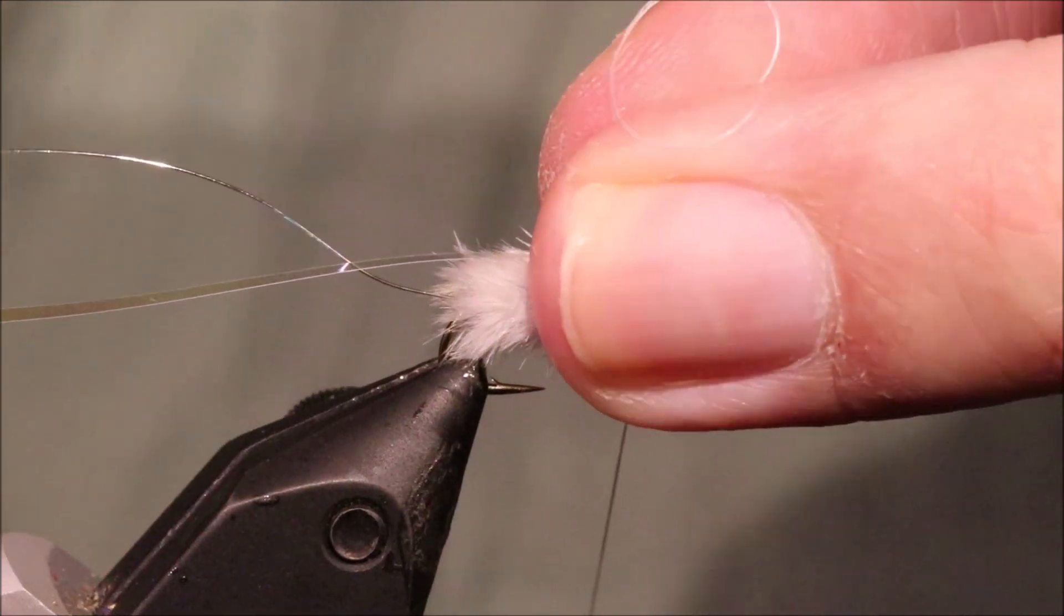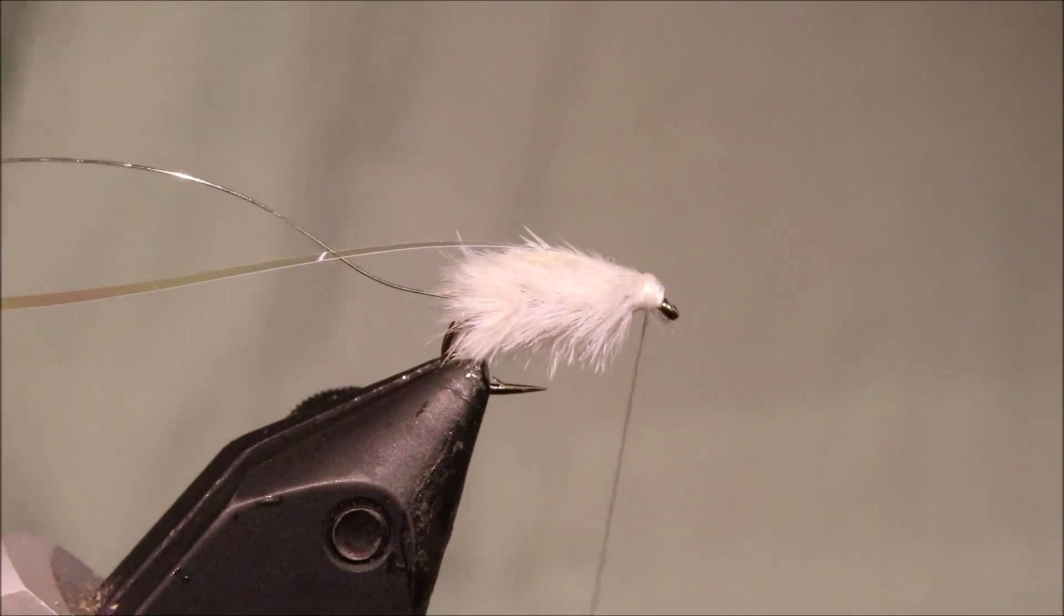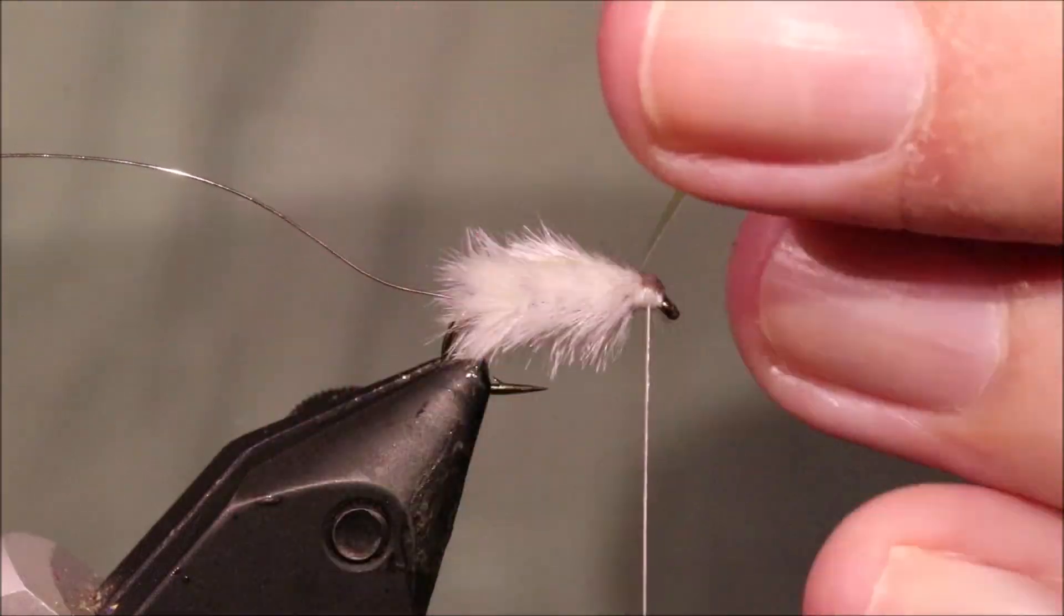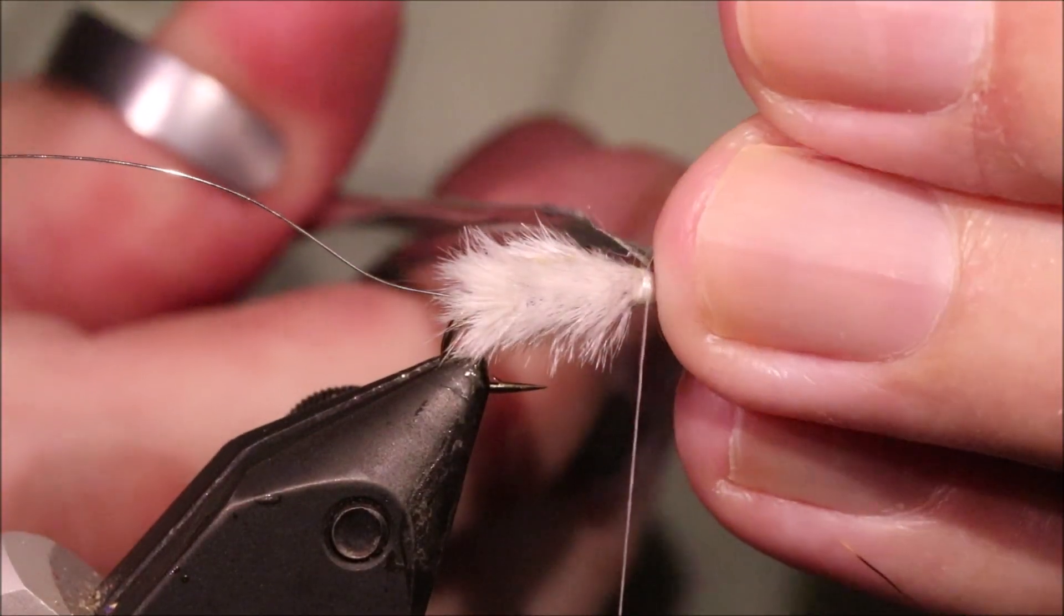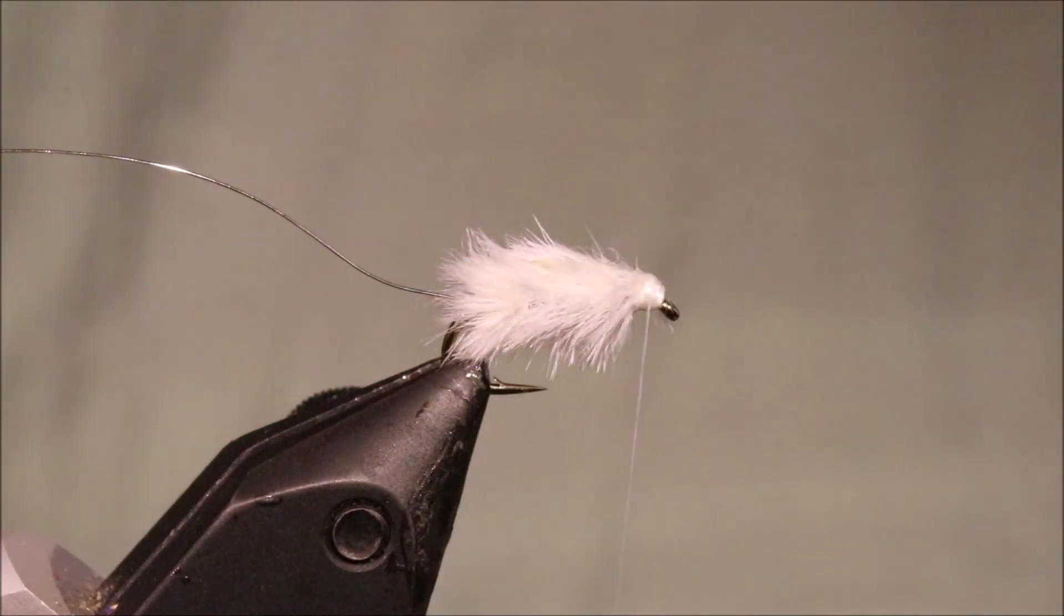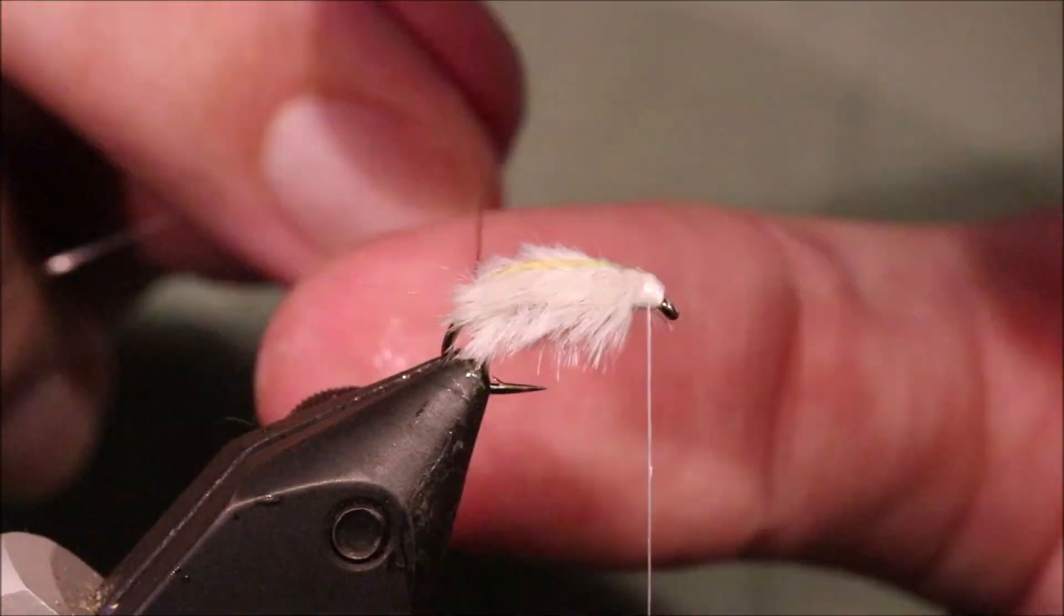I'm going to put a half hitch in, in case I bump my bobbin when I'm winding the rib. Trim away the waste.